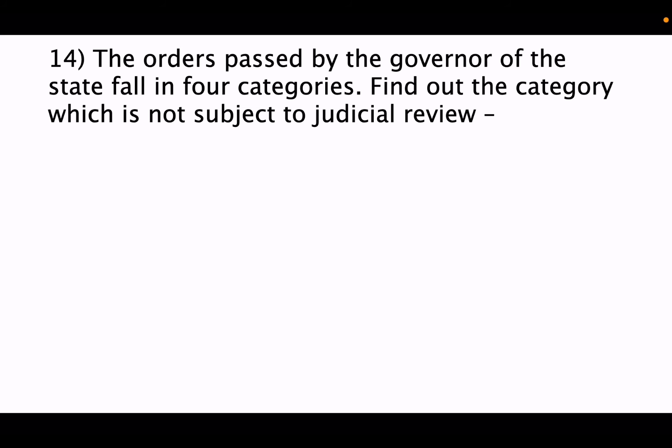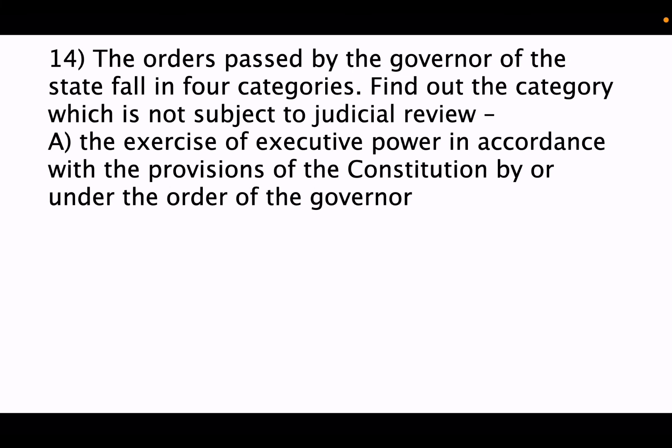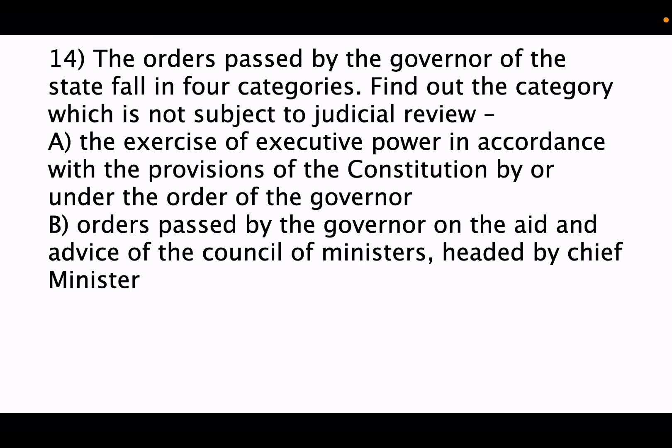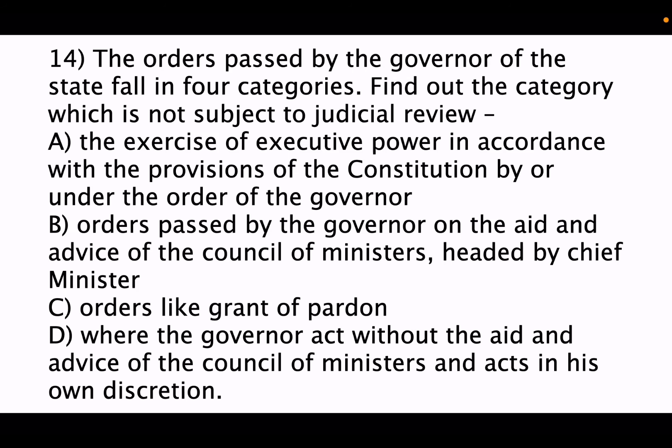Fourteenth question: the orders passed by the governor fall in four categories. Find the category not subject to judicial review. Option A: exercise of executive power in accordance with constitutional provisions by order of governor. Option B: orders passed on the aid and advice of the council of ministers headed by the chief minister. Option C: orders like grant of pardon. Option D: where the governor acts without the aid and advice of the council of ministers and acts in his own discretion. Option D is the correct answer — there is no judicial review when the governor acts in his own discretion.